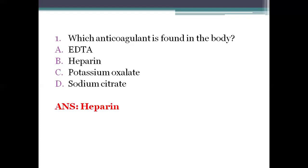An anticoagulant decreases the blood's ability to clot. The right answer is heparin. Heparin is naturally synthesized by mast cells of many tissues such as lung, liver, and gastrointestinal tract. So heparin is a natural anticoagulant.